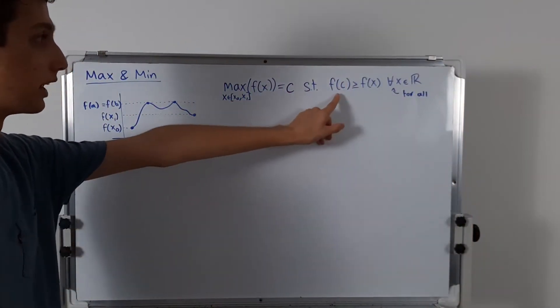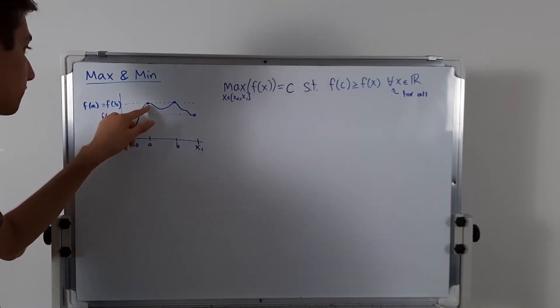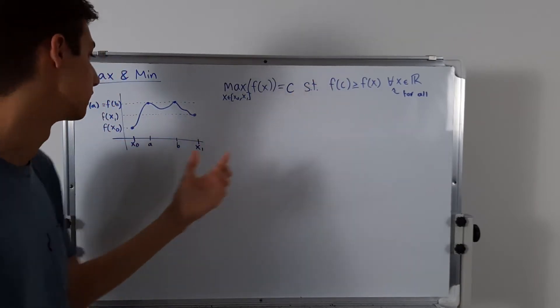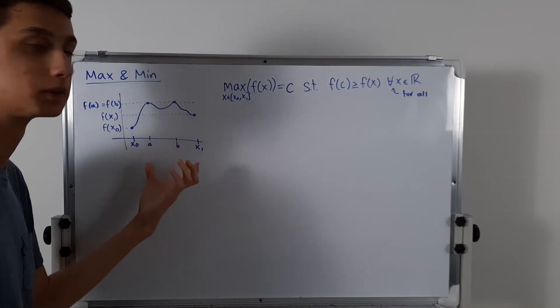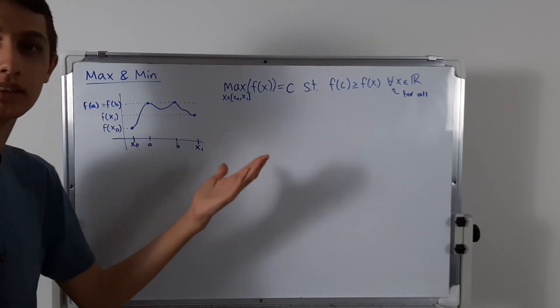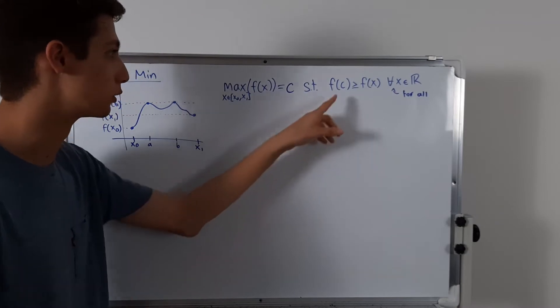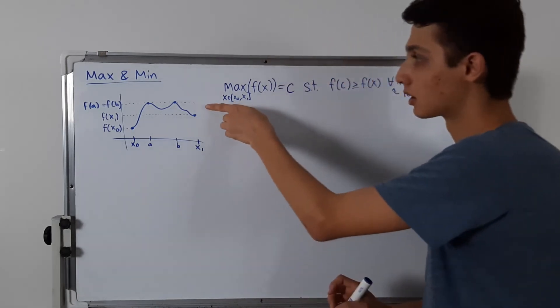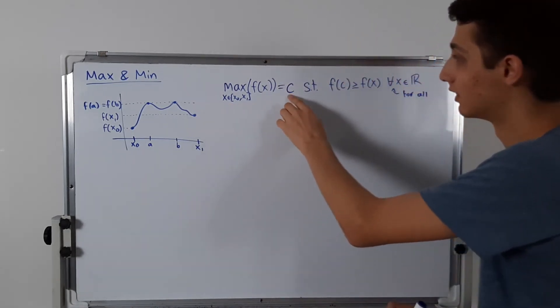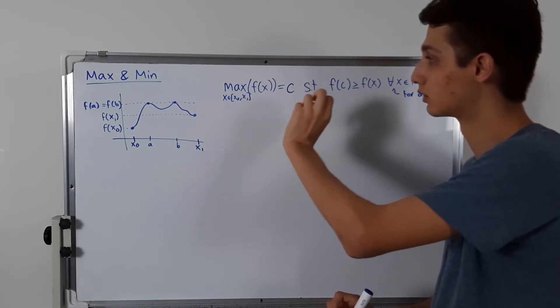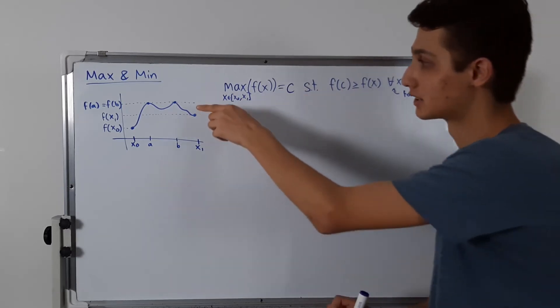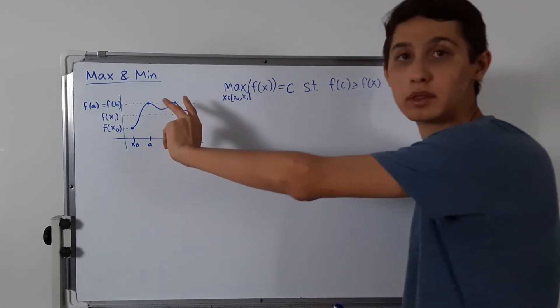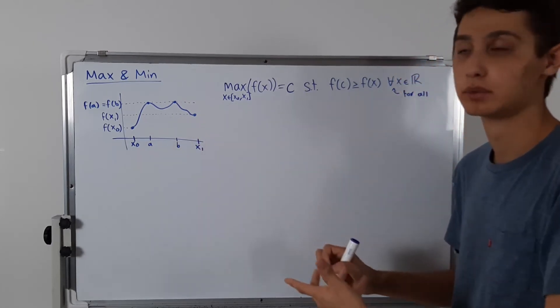So pretty much I'm saying that f of c, whatever value this is, which in this case is f of a and f of b, it's going to be greater than every single other value, f of x, on that interval. And that makes sense, that should make some intuitive sense to you, that it's going to be greater than everybody else. Now, the reason why the equal to sign is there is because it can occur at multiple times. I'm not saying that this is the only value, I'm not saying that there's only one value that actually reaches up here. Because obviously a and b here, they both reach that same value, so there could be multiple.